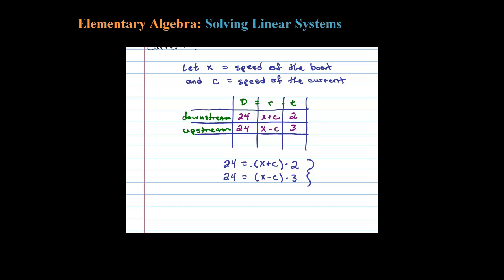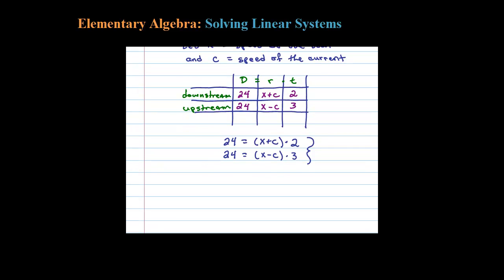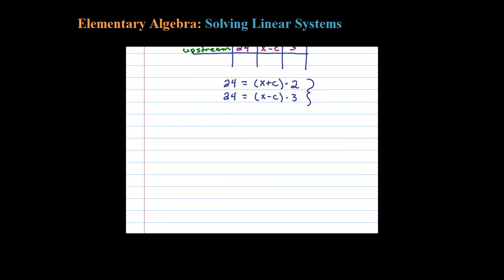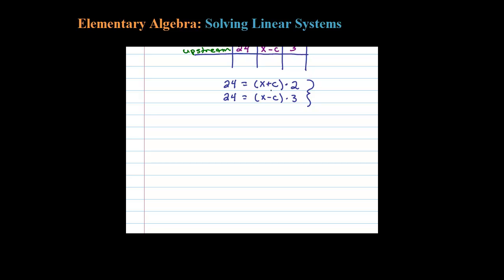So two equations, two unknowns—this is a linear system we can solve. Our setup is 24 equals (X plus C) times 2, and 24 equals (X minus C) times 3. I could distribute the 2 and 3, but I notice that 2 goes into 24 and 3 goes into 24, so as a little shortcut I'm going to divide both sides of each equation.